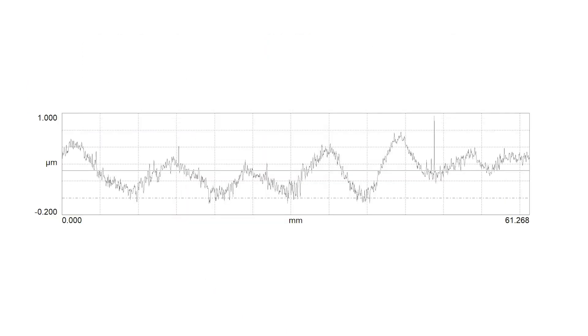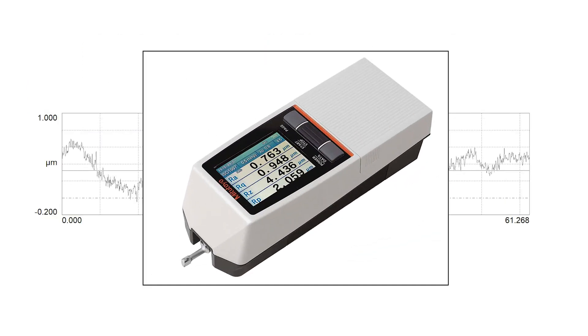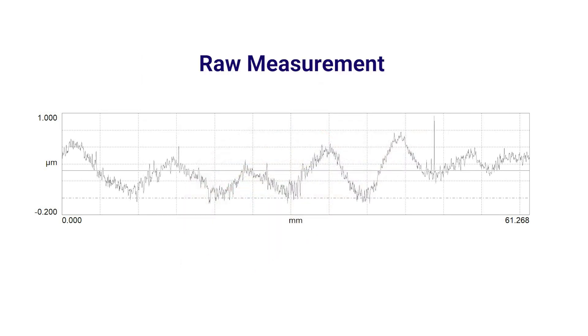Here's a two-dimensional profile of a surface, like you might have measured with a stylus. We call this the raw measurement. It's a record of the movement of the stylus as it passed over the surface. So is this the surface roughness? Not exactly.